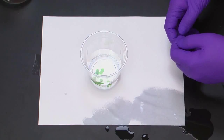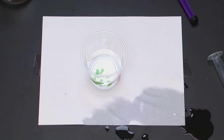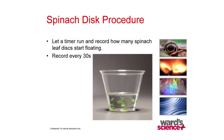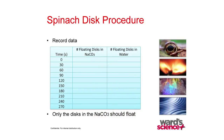Record every 30 seconds how many spinach leaves start floating. What you should see is the discs in the sodium bicarbonate solution — every 30 seconds, eventually you should start seeing more and more of these discs floating as photosynthesis progresses.